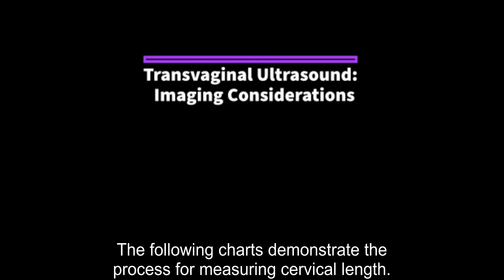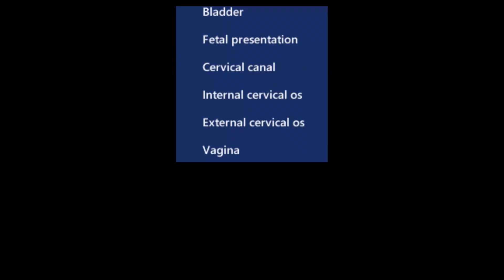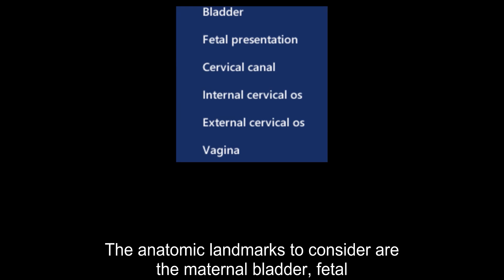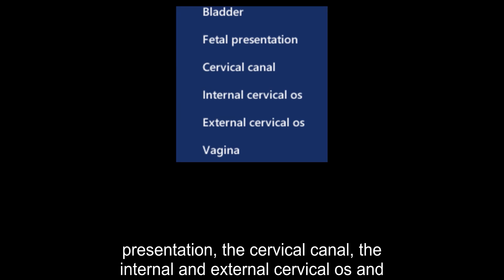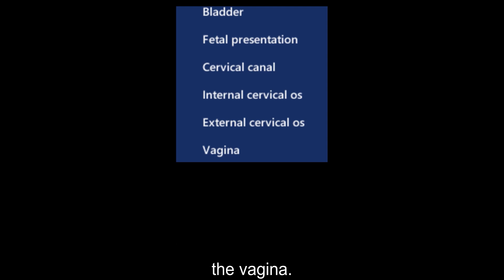The following charts demonstrate the process for measuring cervical length. The anatomic landmarks to consider are the maternal bladder, fetal presentation, the cervical canal, the internal and external cervical os, and the vagina.